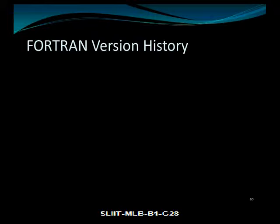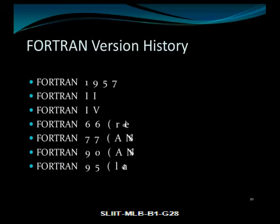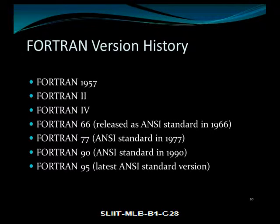Fortran version history: Fortran 1957, Fortran 2, Fortran 4, Fortran 66 released as ANSI Standard in 1966, Fortran 77 as ANSI Standard in 1977, Fortran 90 as ANSI Standard in 1990, and Fortran 95 as the latest ANSI Standard version.